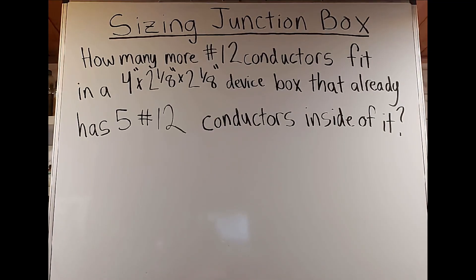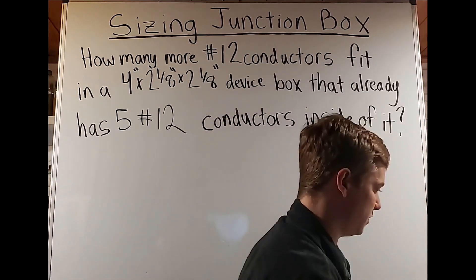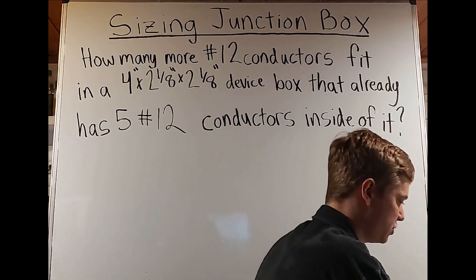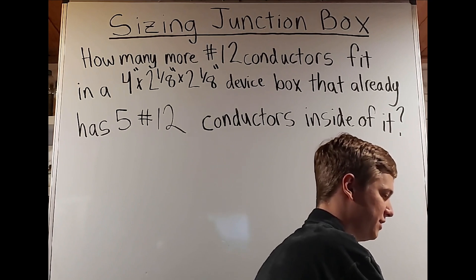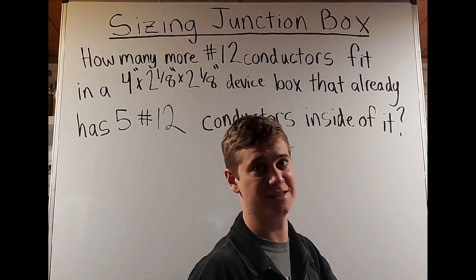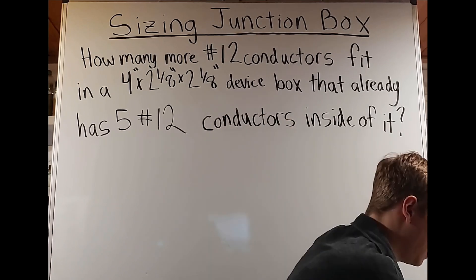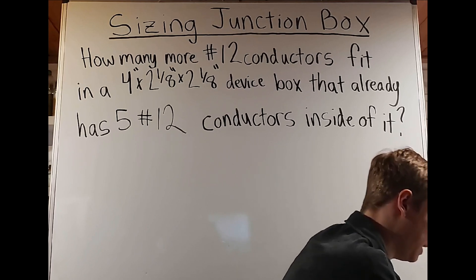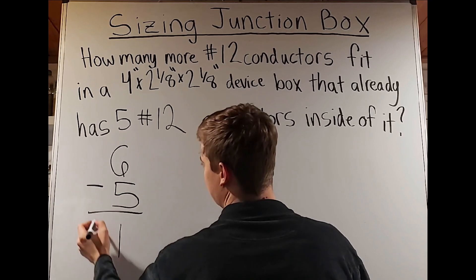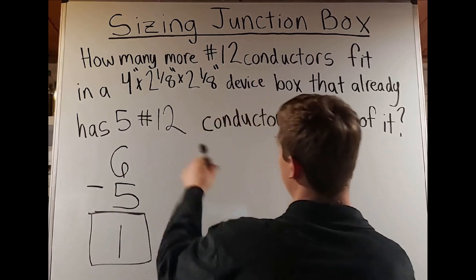Next: how many more number-12 conductors fit in a four by two-and-one-eighth by two-and-one-eighth inch device box that already has five number-12 conductors inside? We go to Table 314.16A and find that device box size — note that the second and third numbers are repeating while the first differs. Looking under 12-gauge conductors, we see six is the maximum. We already have five, so we can fit one more additional number-12 conductor in this device box.